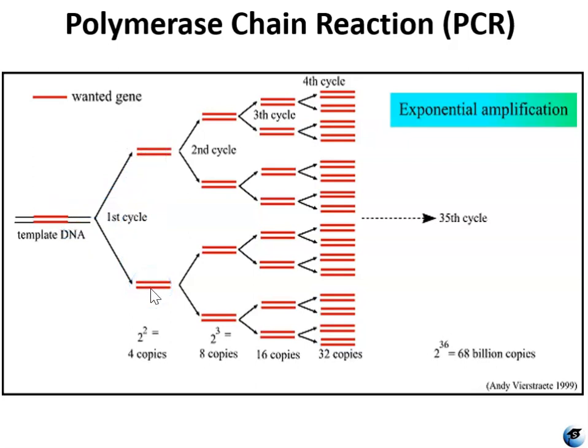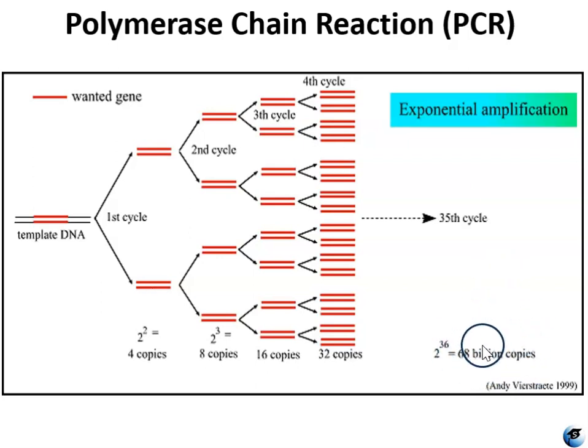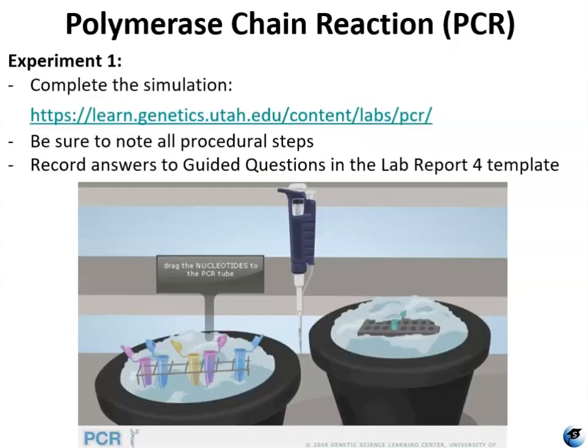Typically a PCR protocol includes somewhere around 30 cycles — 20 to 40 cycles — and that allows for amplification of a single target sequence to billions of copies of that target sequence. All of this happens within the time span of about an hour to an hour and a half.